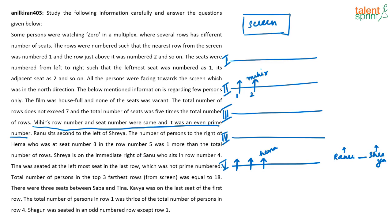The number of persons sitting to the right of Hema is one more than the total number of rows. We know there are at least 5 rows, so it could be 5, 6, or 7 rows. If there are 5 rows, 6 people sit to Hema's right. If 6 rows, then 7 people. If 7 rows, then 8 people. We still need to determine the exact total.